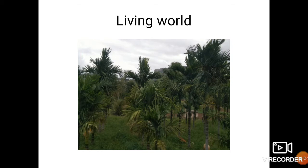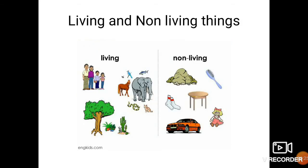In our living world we come across living and non-living things. So what are living things? Living things are the ones where life exists in them and there is movement. Whereas for non-living things, life doesn't exist and they are stationary.